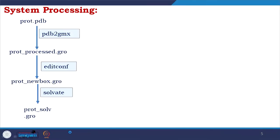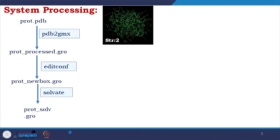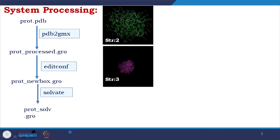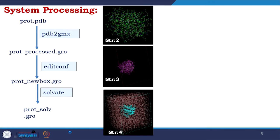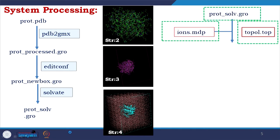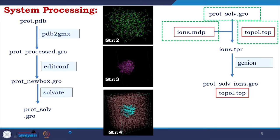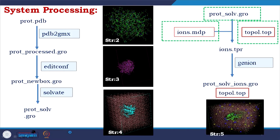Then we apply editconf which gives us a new box — you add the hydrogens and get the new box, and finally you solvate it so the box is now solvated. Then we go to the next step where we have the protein_solv.gro file, the topol.top associated file, and we add ions.mdp. The ions.mdp, .gro, and .top files together produce an ions.tpr file, and then genion places the ions. So starting from a structure, we arrive at a point where we can perform the real simulation.